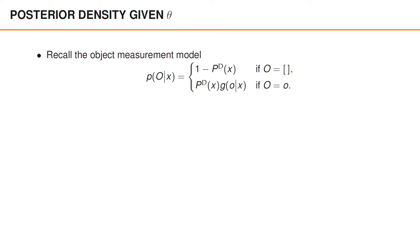In the section about models, we found that the distribution of the object measurement matrix p(O|x) takes the value (1 - P^D(x)) if O is an empty matrix, and P^D(x) times g(o|x) if the matrix capital O is the vector lowercase o.